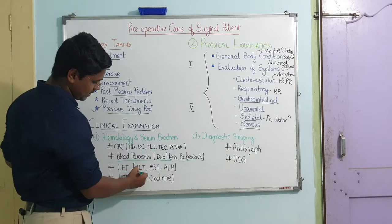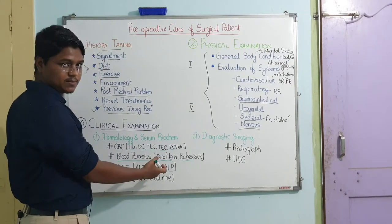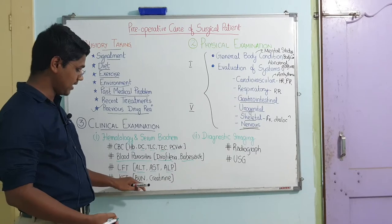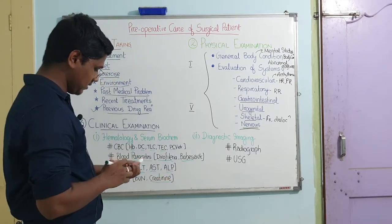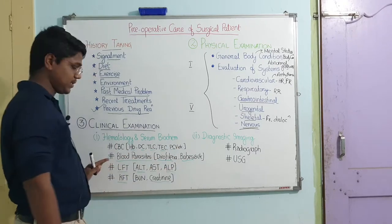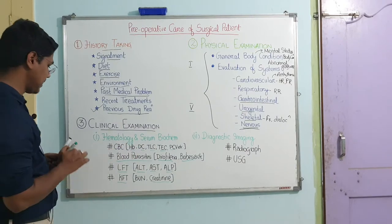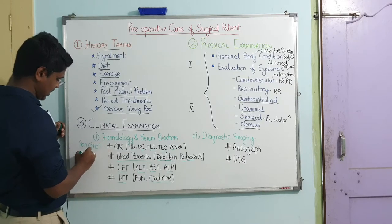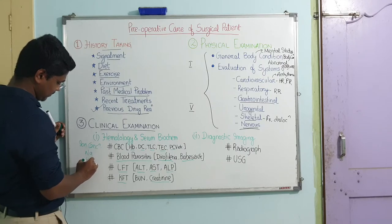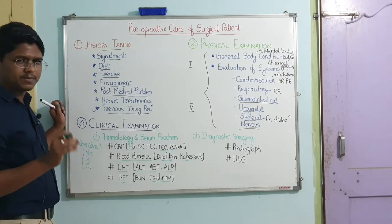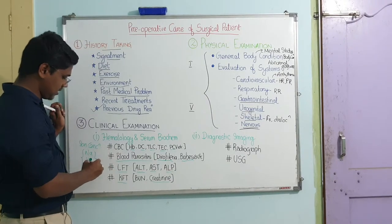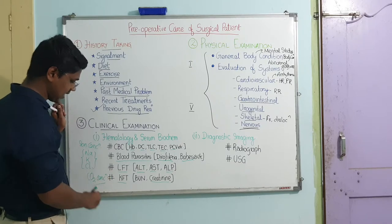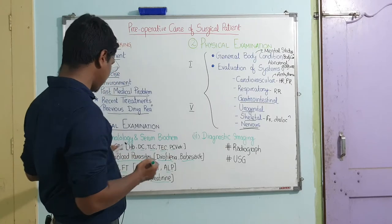Next is LFT — liver function test. Measure the enzymes ALT, AST, and ALP; these three are liver enzymes. Next is kidney function test, measuring BUN (blood urea nitrogen) and creatinine. Apart from these, you can also measure ion concentrations such as sodium, potassium, and chloride if you have the facility. You can also measure CO2 concentration to check for hypercapnia or hypocapnia. This covers hematology and serum biochemistry.